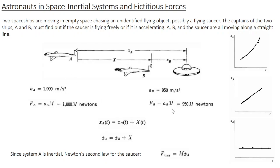So two people are measuring two different forces. You know the reason why this happens — at least one of them is in a non-inertial frame. If both were inertial, they would both measure the same force, because acceleration remains the same in two different inertial frames. Here the accelerations are different because at least one of them is non-inertial.